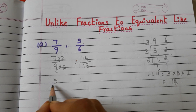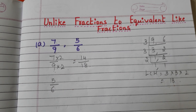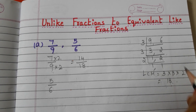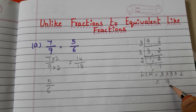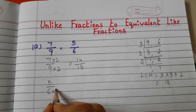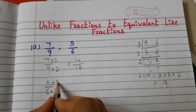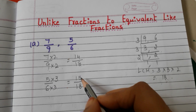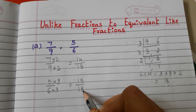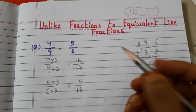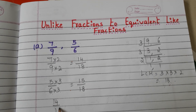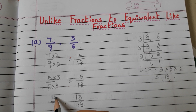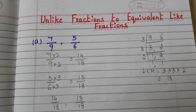Now take 5 by 6. Here also we have to multiply the numerator and denominator with the same number so that the denominator becomes 18. Here 6 is there and we have to get 18, so we multiply 6 by 3 — 6 threes are 18. So we multiply the numerator also with 3: 5 threes are 15 and 6 threes are 18. Now 15 by 18 is an equivalent fraction for 5 by 6. Taking 14 by 18 and 15 by 18, observe the denominators — they are the same, so 14 by 18 and 15 by 18 are now like fractions.